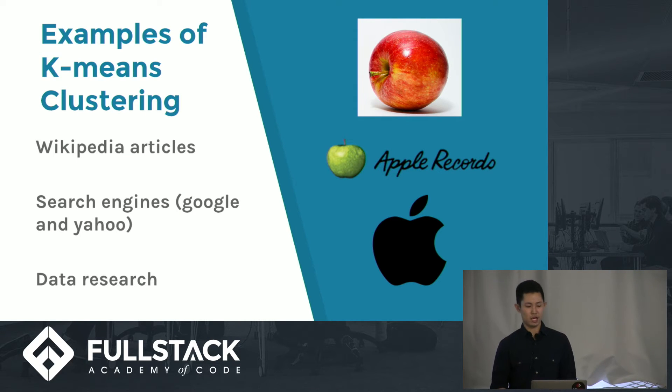Some examples of K-means clustering include Wikipedia articles. For example, if you search Wikipedia for an apple, you might get all sorts of different apples: the apple fruit, Apple Records, and Apple the company. By using the K-means clustering algorithm, it is able to divide them into different categories: a cluster of fruit articles, a cluster of music articles, and a cluster of company articles.